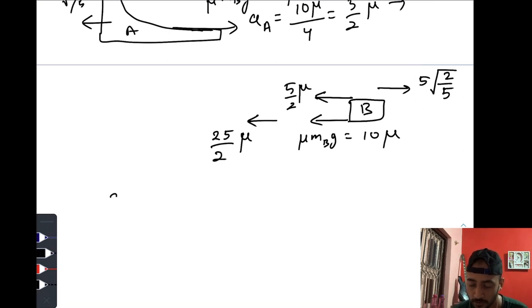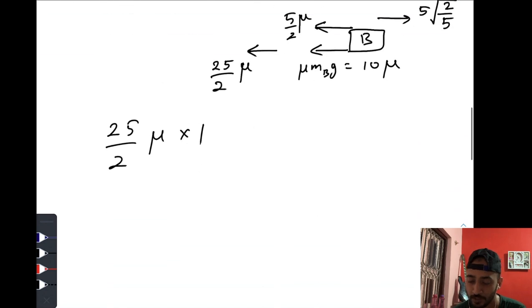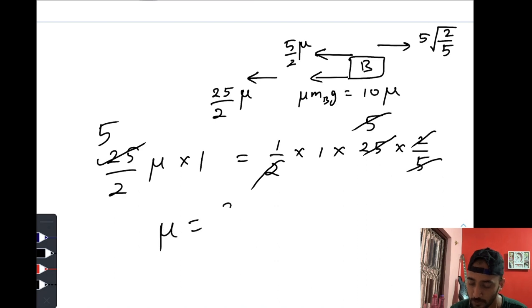So work done by this force is this one, because one meter is the distance traveled by block B over A. And this work is utilized to overcome the kinetic energy of block B with respect to A, that is 25... so its square times 2/5, 5, 5. So μ is equal to 2/5, so that would give you 0.4. So the final answer is 0.4, option C.